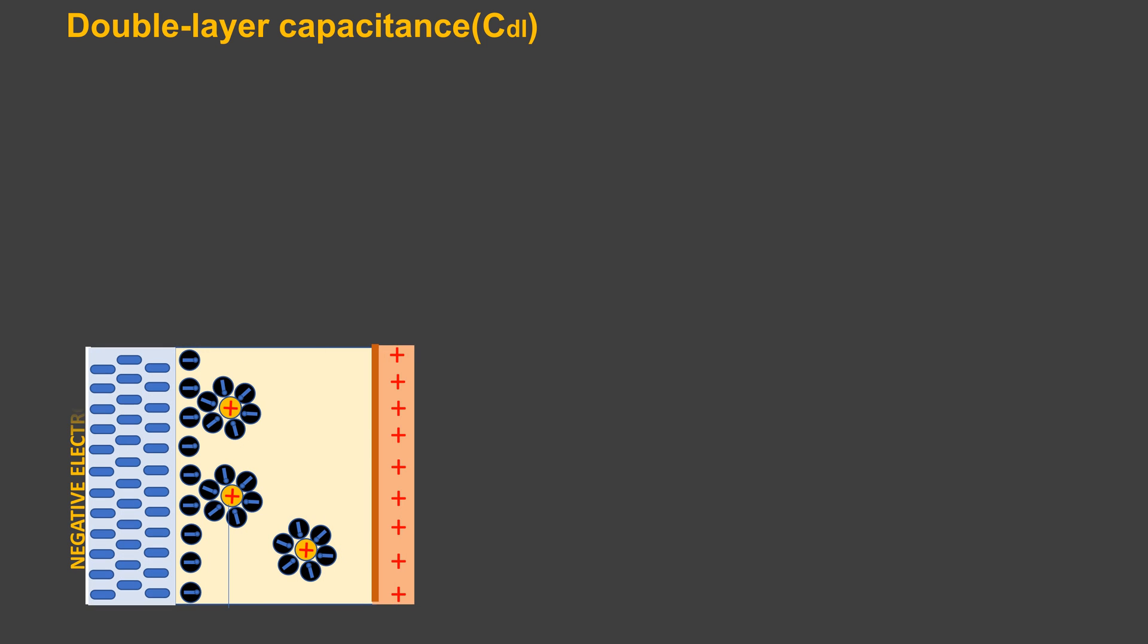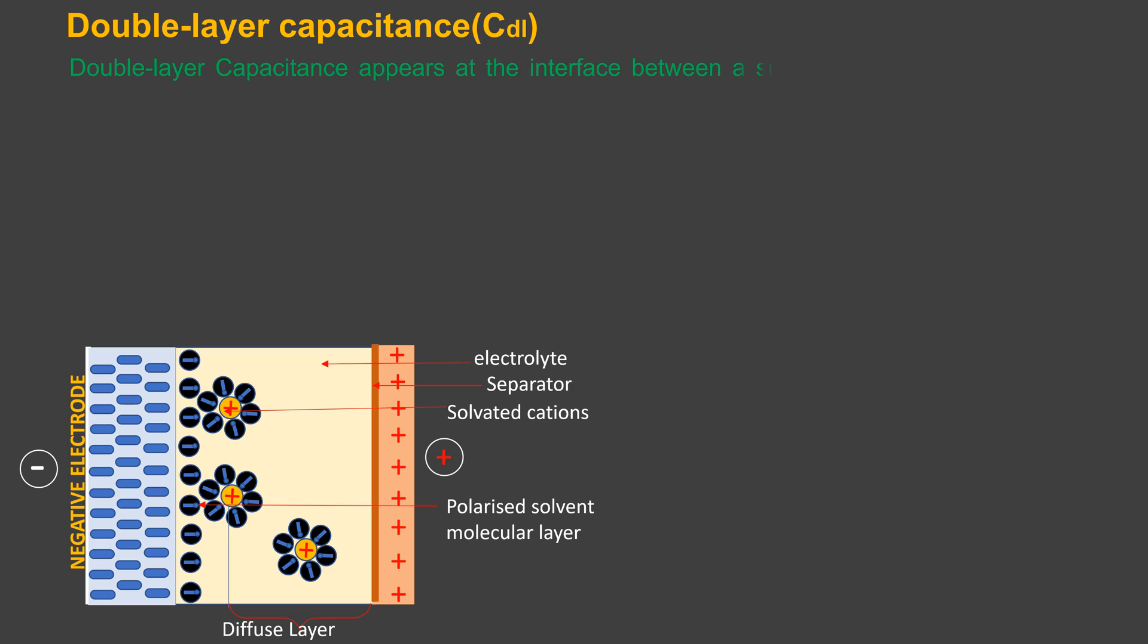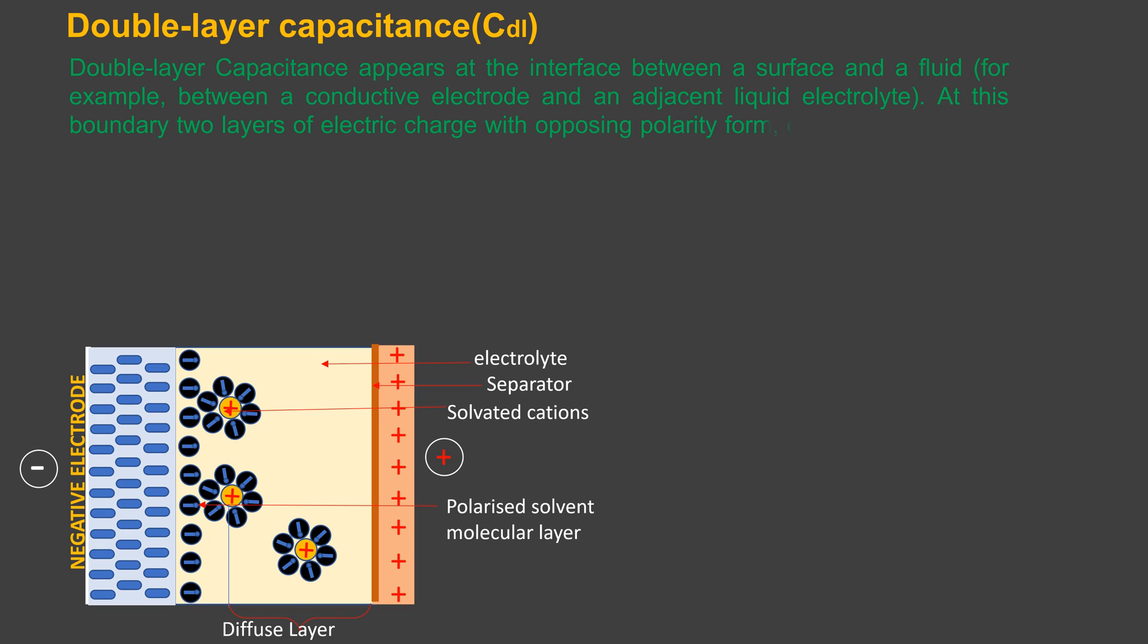Double layer capacitance, CDL. Double layer capacitance appears at the interface between a surface and a fluid, for example between a conductive electrode and adjacent liquid electrolyte. At this boundary, two layers of electric charge with opposing polarity form: one at the surface of the electrode and one in the electrolyte.